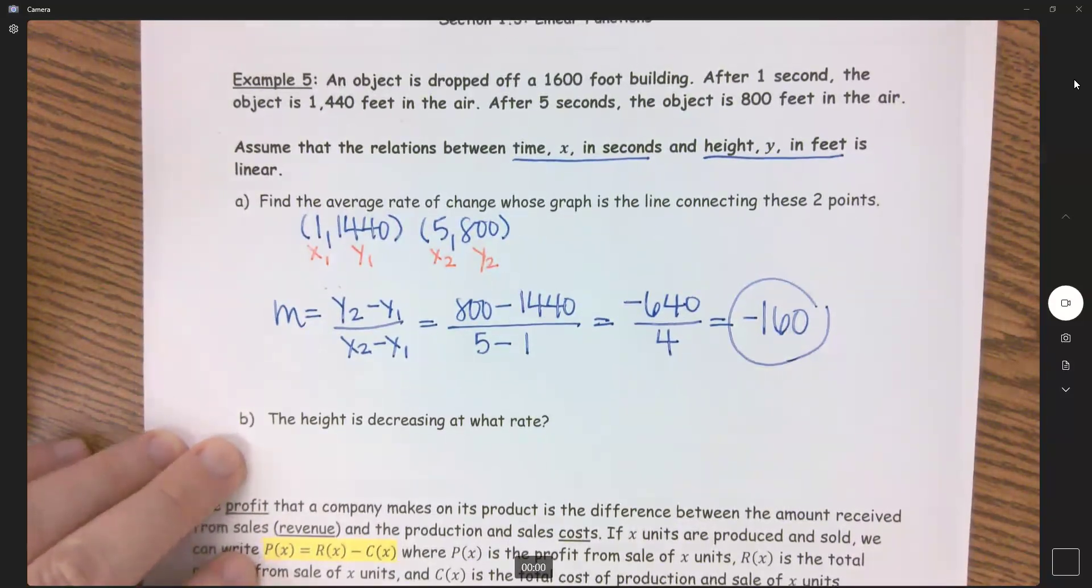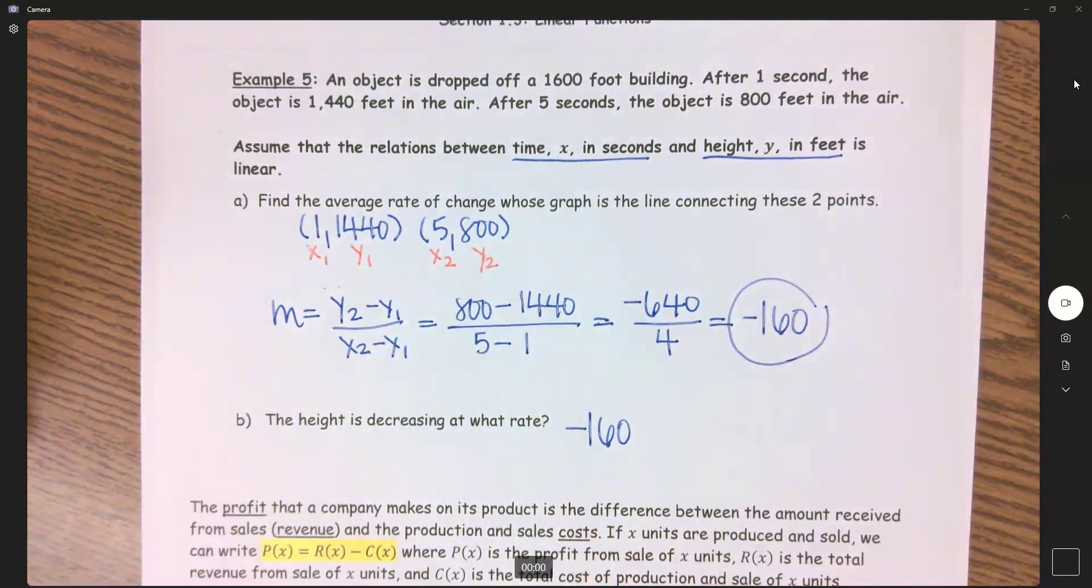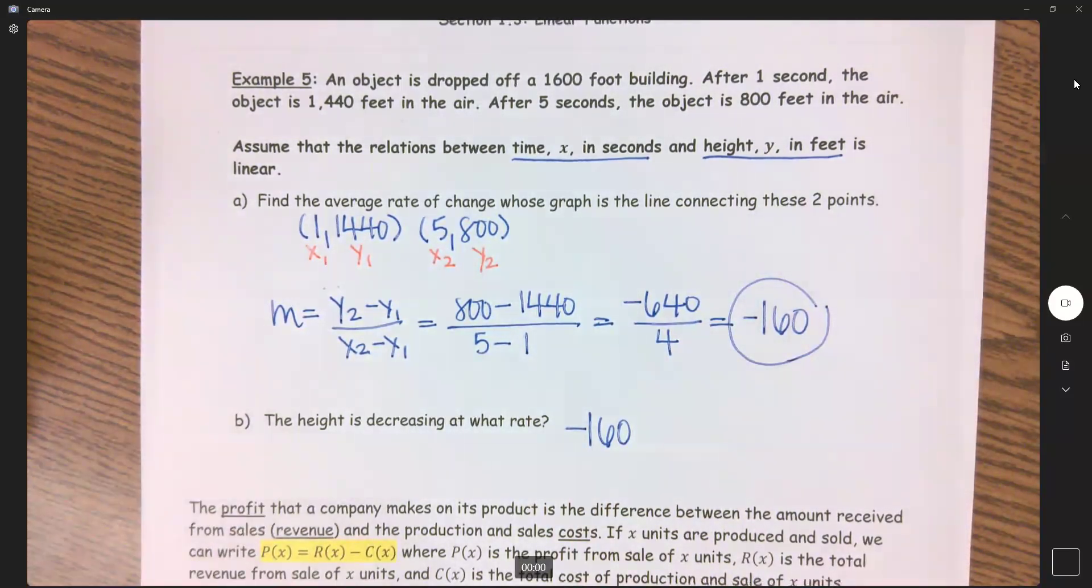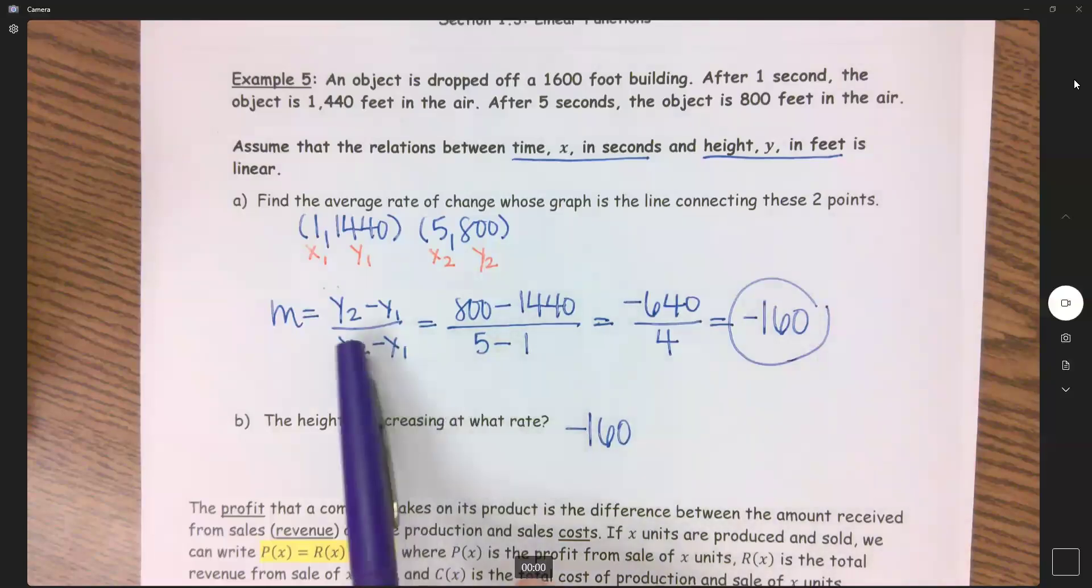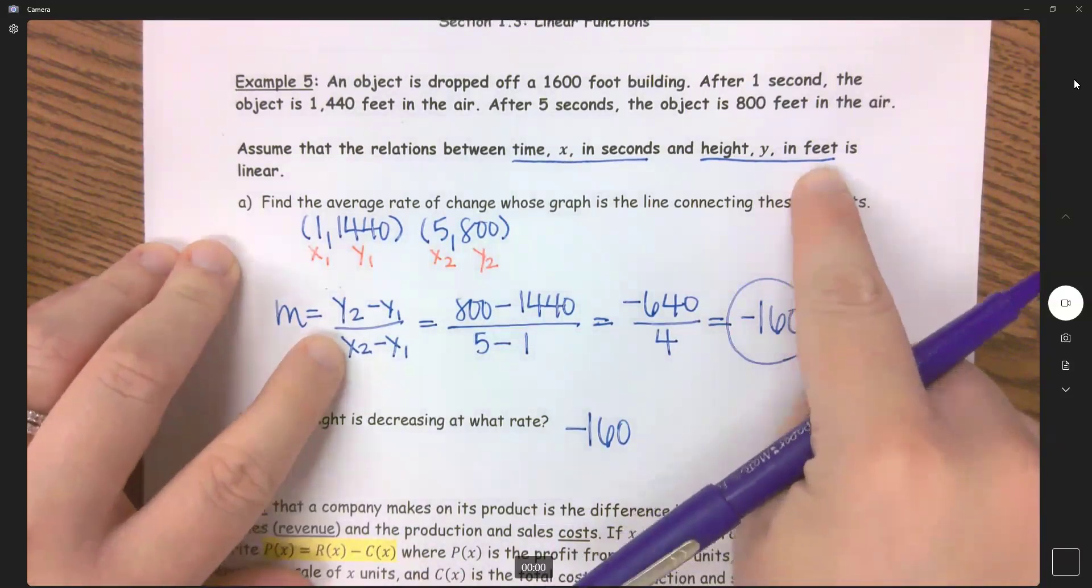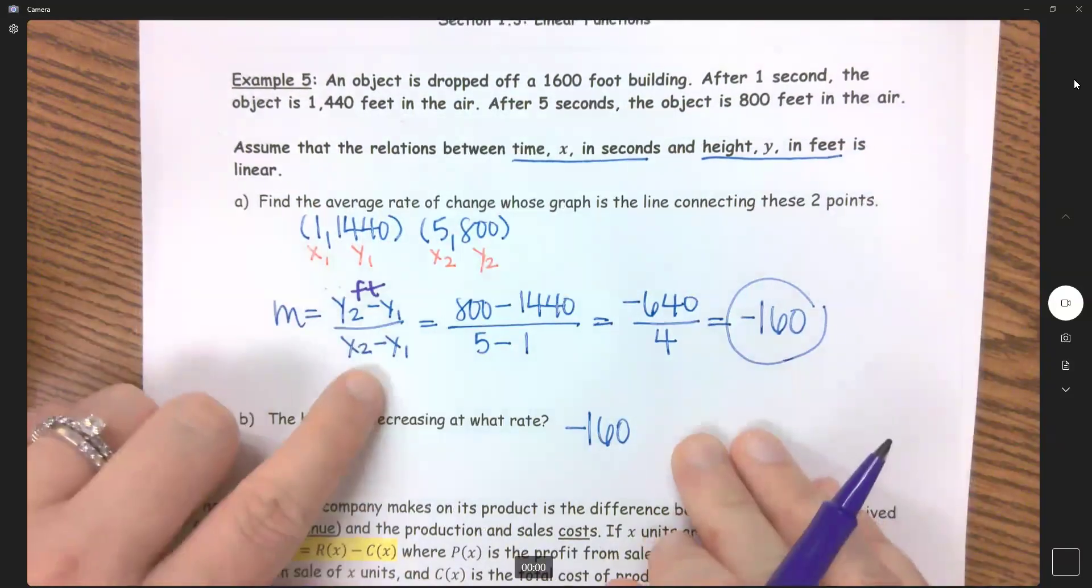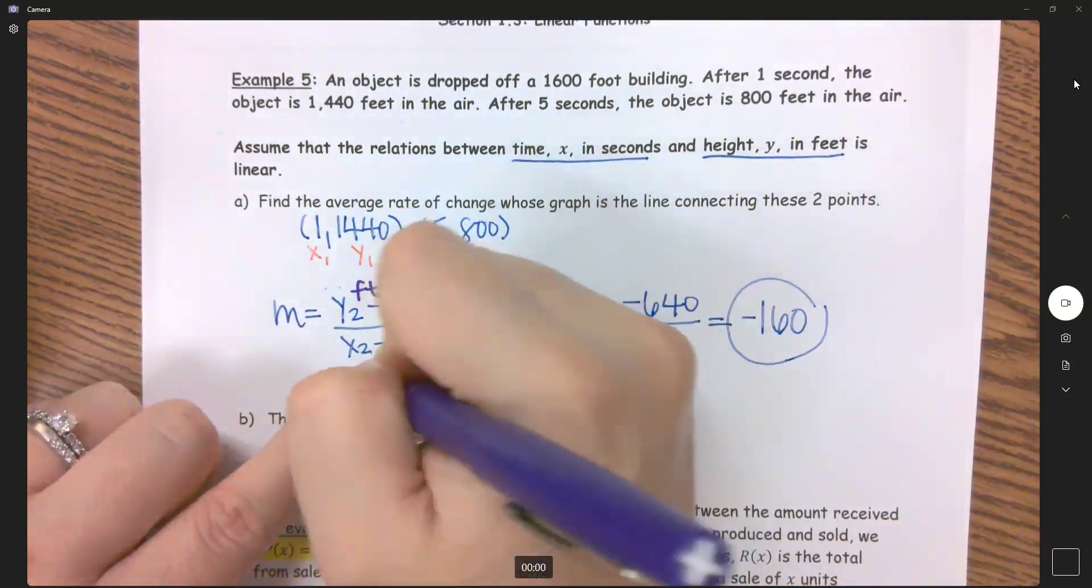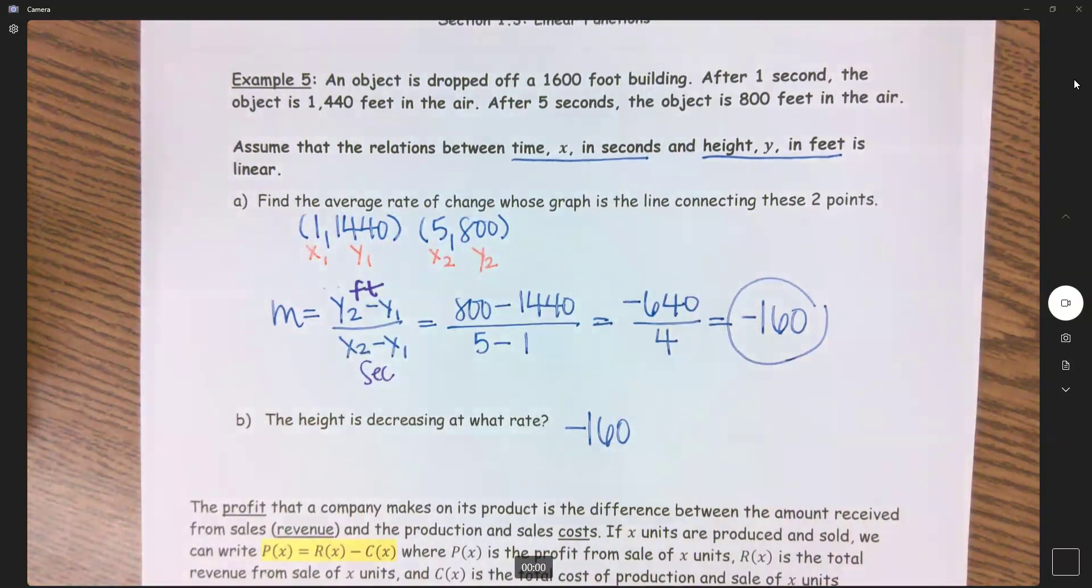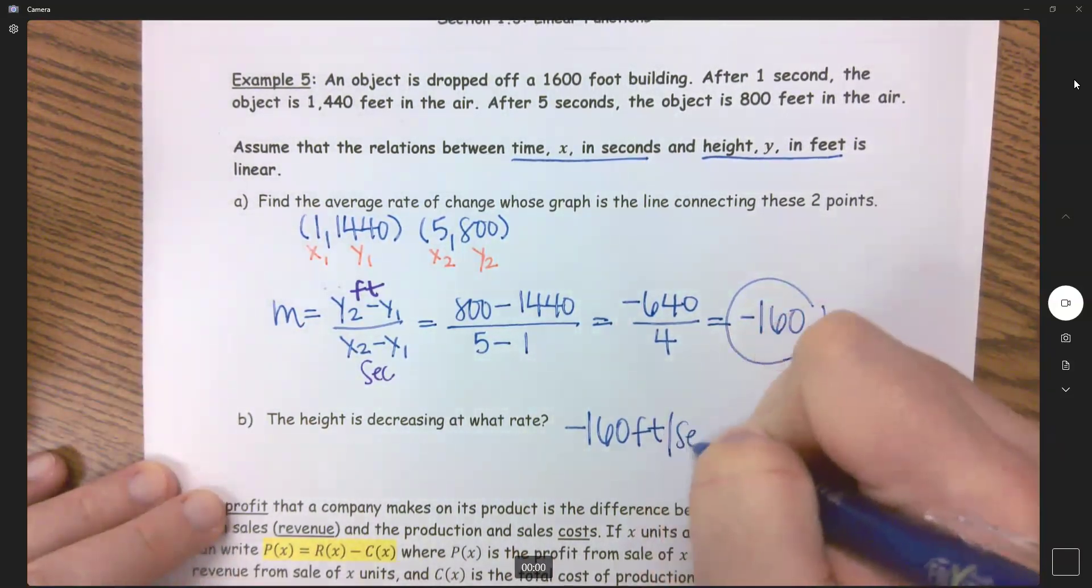And then b says the height is decreasing at what rate. So here we need some units. It's still going to be negative 160 but what are my units here? If we're subtracting our y on the top, y was in the unit of feet over my x's which were in seconds. So this is decreasing at the rate of negative 160 feet per second.